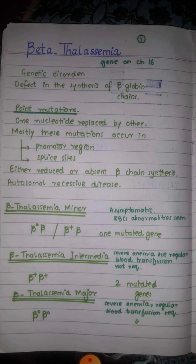In beta thalassemia there are point mutations, and these point mutations take place on chromosome 16 on which the beta globin gene is present. These point mutations can take place in two regions: number one in the promoter region, and number two on the splice sites.